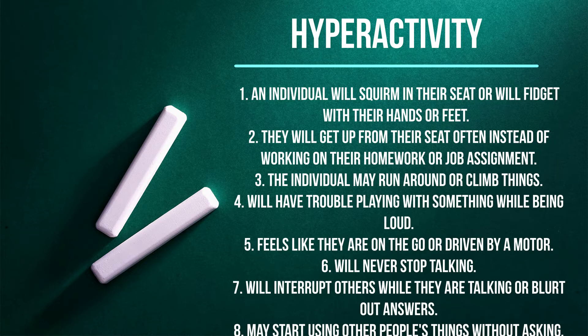Number four, will have trouble playing or being involved in something without being loud. Number five, feels like they're on the go or driven by a motor where they don't want to sit still for a long period of time. Number six, the individual will talk consistently. Number seven, the individual will blurt out an answer to a question before the question is asked or will interrupt.